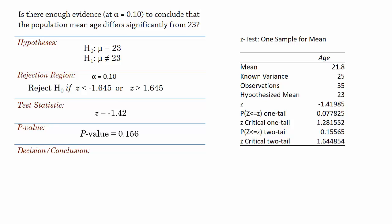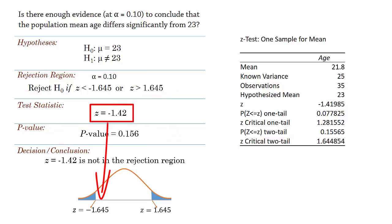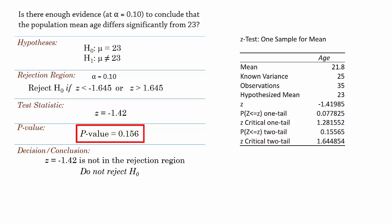Next, we make a decision on whether or not to reject the null hypothesis. We can use rejection region or p-value to make a decision here. The test statistic negative 1.42 does not fall into the rejection region, so we will fail to reject the null hypothesis. Using the p-value, we also see that 0.156 here is greater than our significance level of 0.10, and that also tells us not to reject the null hypothesis.